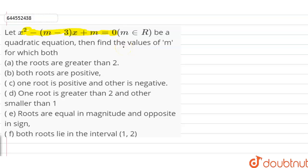According to the question, we have the equation and for every value of m belonging to R, we have to find the different values of m according to which the location of roots is given to us. The first part says that the roots are greater than 2.